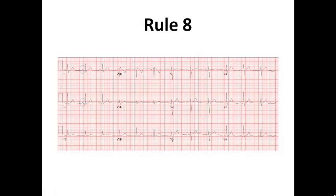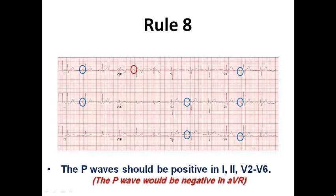Then we come to rule number eight and rule number eight checks the P-waves and it mentions that it should be positive in lead 1, 2 and from V2 to V6. And of course as we mentioned before it would be negative in AVR. And this is explained by the axis of atrial depolarization which was mentioned in the previous lecture. That axis of atrial depolarization from the SA node is directed to the left side and downwards. And this explains why it is positive in lead 1, lead 2 and negative in AVR. And of course it would be positive from V2 to V6. In V1, it may be biphasic or it may be negative sometimes.